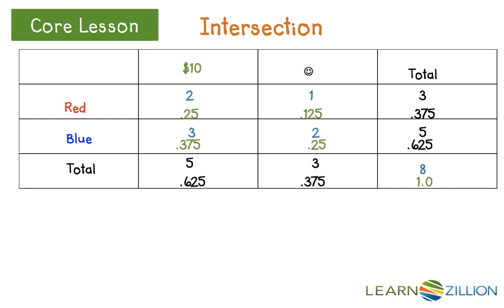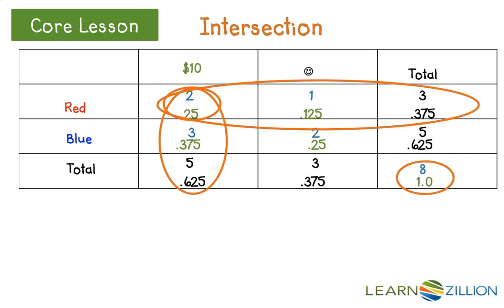Let's begin with the intersection. There are a total of two red and lucky envelopes out of eight total envelopes. Therefore, the probability of the intersection of red and lucky is 2 divided by 8, or 25%.